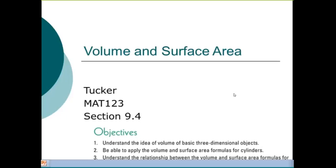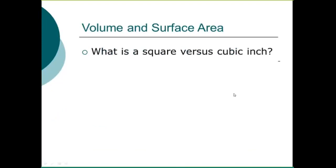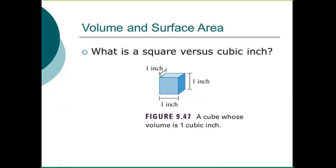In this lesson we're going to take a look at volume and surface area, which is section 9.4 in your textbook. We want to first start off by talking about what a square versus a cubic inch looks like, and that will set up our whole discussion for volume. An inch is just one dimension; squared, we see the face of a cube. If you've seen a sugar cube before, that's kind of what volume looks like — stacking sugar cubes up.